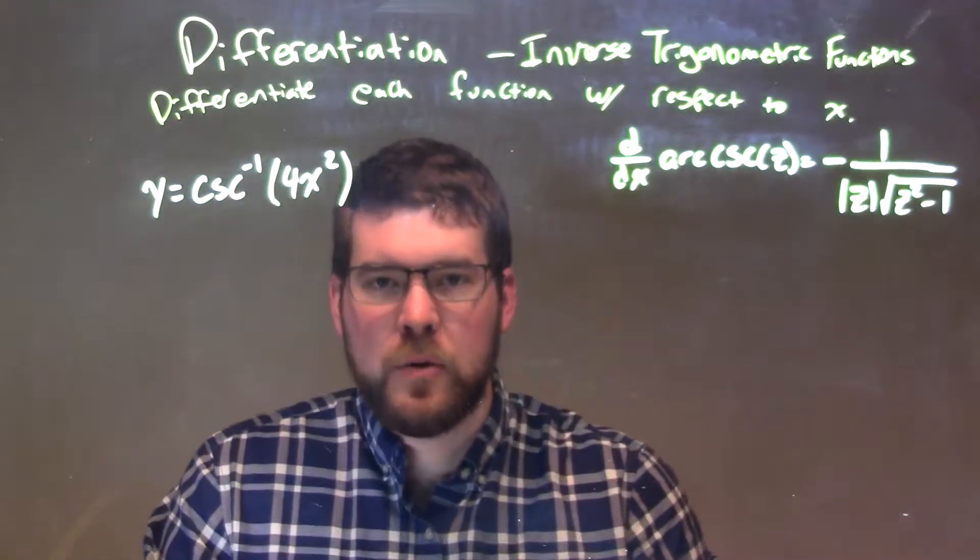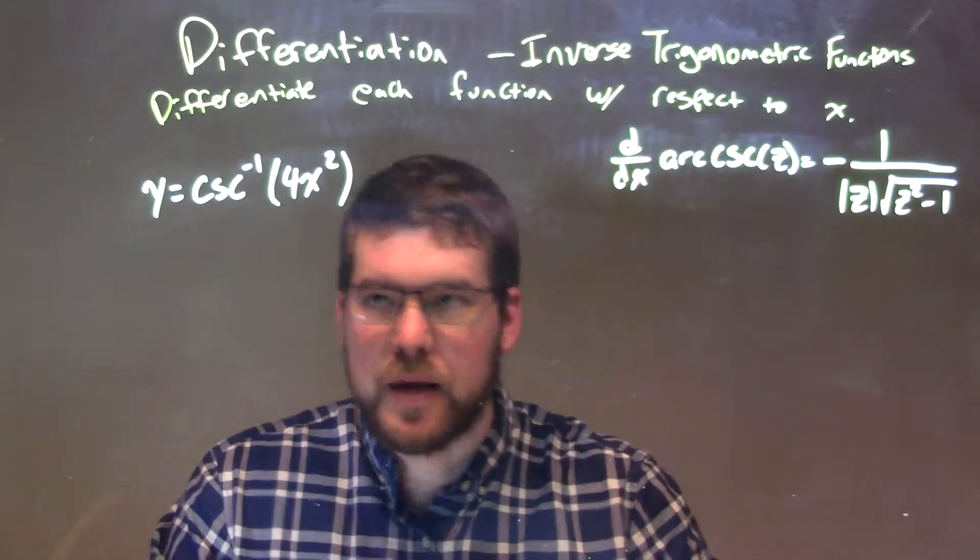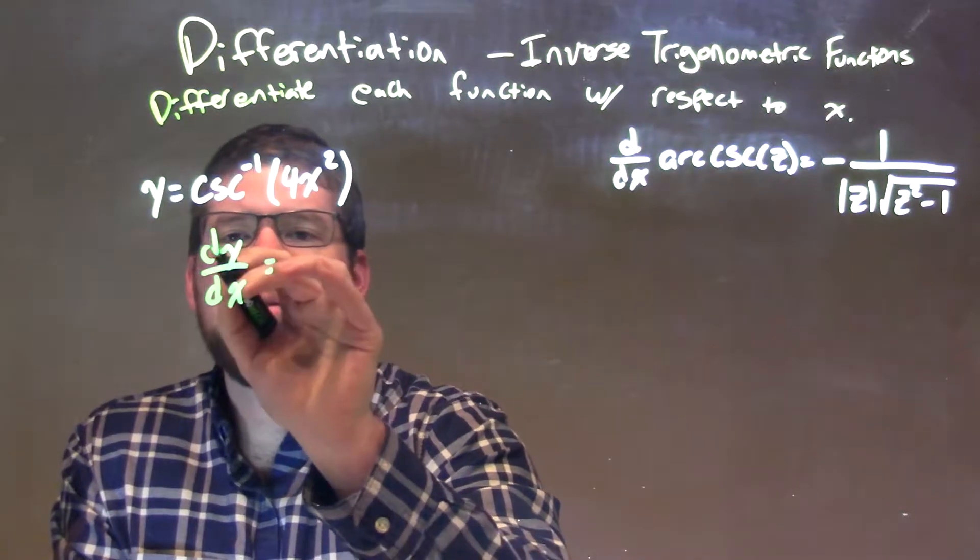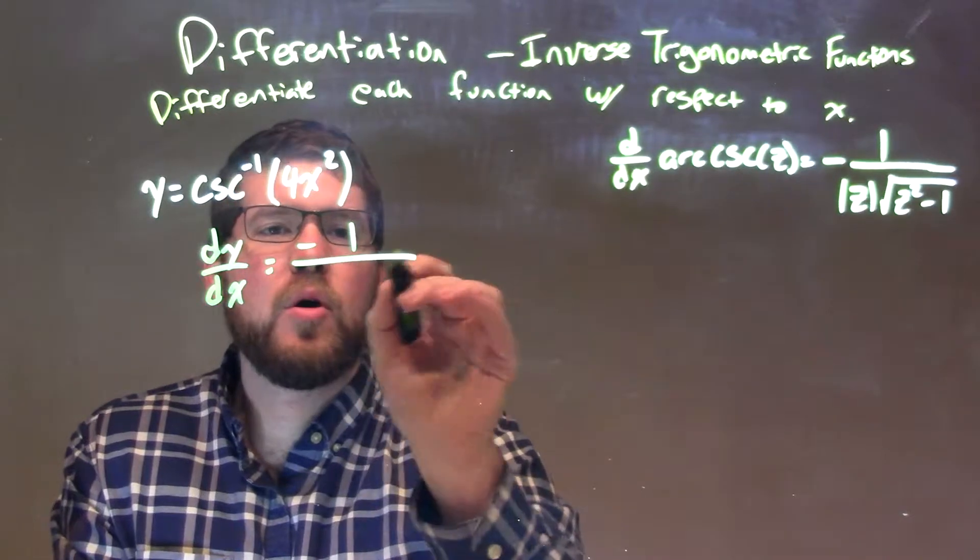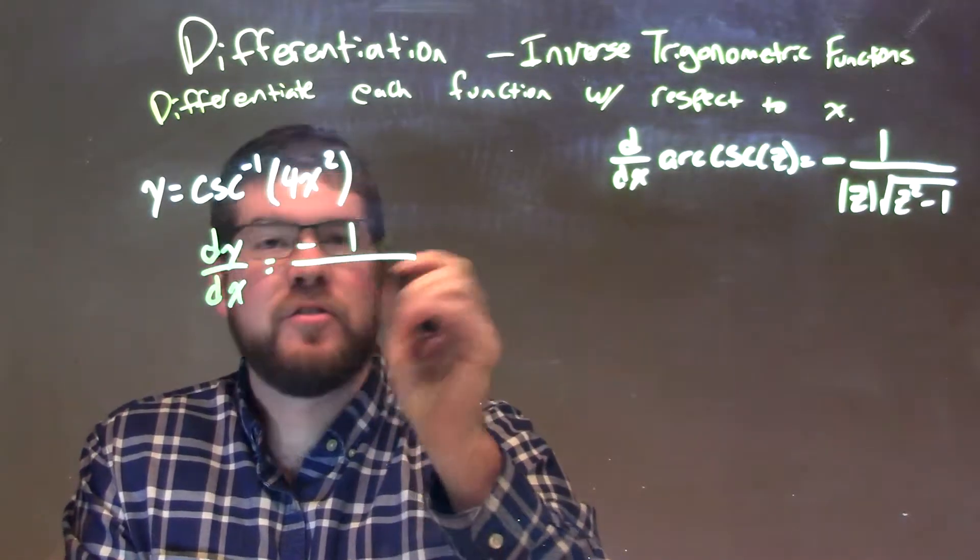Well, what I'm going to do is apply my rule for the derivative of arc cosecant. So, dy/dx here is equal to, let's take that derivative using that rule, negative 1 over, you can put a negative to the 1, the absolute value of z.